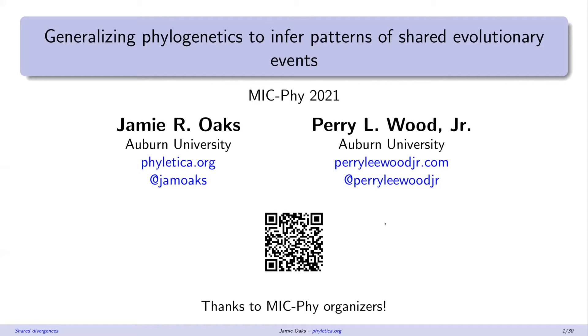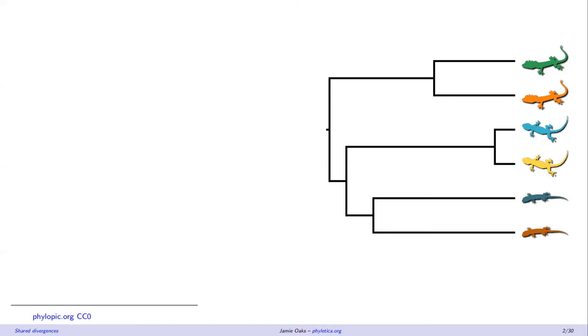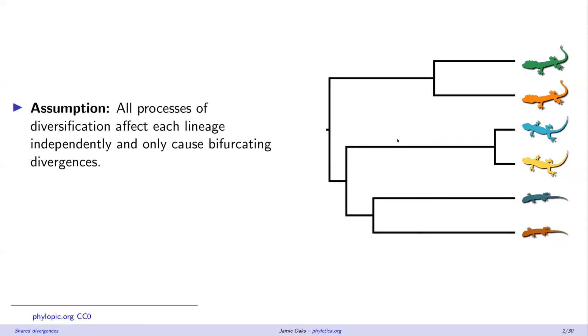So this idea that I've had for a while, let's start with an assumption. When we go out and collect data from our favorite group of critters, and we want to infer a rooted time proportional or time absolute tree from them, we're making an assumption that the divergences in that tree are independent and strictly bifurcating.